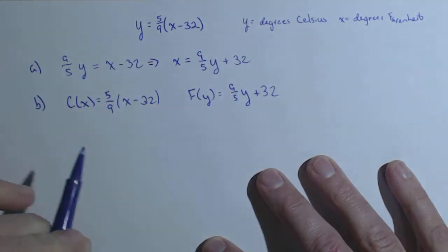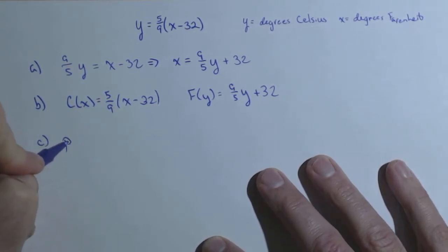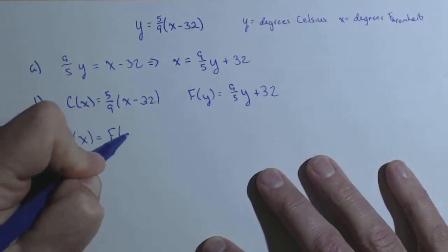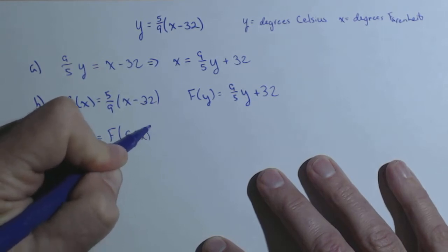now we can do some things with compositions. In particular, let's see what happens when we compose f with c of x. So, f of c of x,